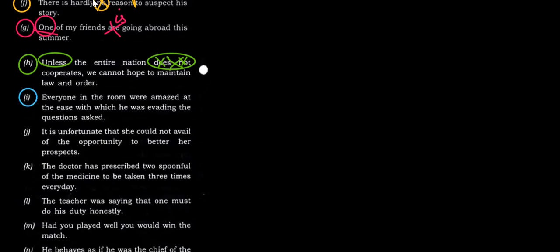Next: Everyone in the room. Everyone means every single person was, because everyone means every single person. It's a singular form of the verb. So everyone in the room was amazed at the ease with which he was evading the questions asked.